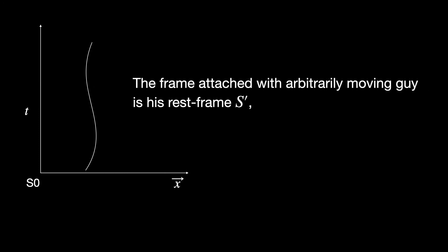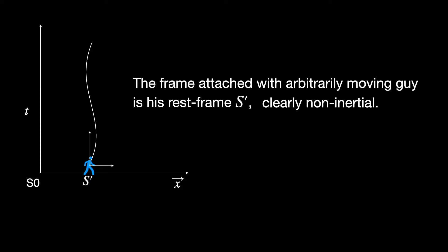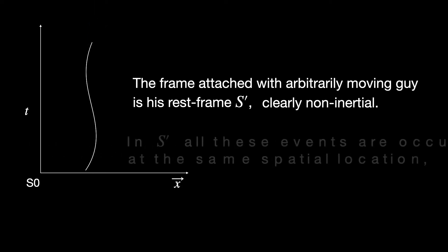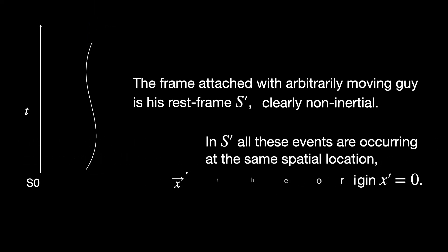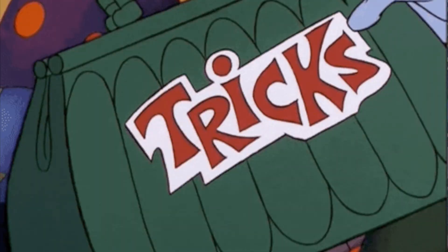The frame attached to this arbitrarily moving person — his rest frame, let's call it S' — is clearly non-inertial. Since this S' guy is present on all the event points that lie on his world line, in his rest frame S' all these events are occurring one after the other temporally, but all at the same spatial location — let's say x' = 0, the origin where this guy is at all times. Now consider two events 1 and 2 infinitesimally close to each other on the world line of this arbitrarily moving person. I am insisting on an infinitesimal interval in particular so that we can use the magic tricks that calculus offers us.